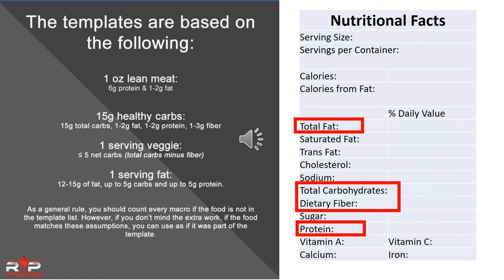The first thing you need to think about when trying to figure out if a particular food fits into your plan is to look at the template assumptions we have on the RP clients Facebook page, and that many of you were sent when you first signed up for one-on-one coaching. One ounce of lean meat has about six grams of protein and one to two grams of fat. Per 15 grams of healthy carbs, you can expect one to two grams of fat, one to two grams of protein, and one to three grams of fiber. Things are considered a vegetable if one cup has five net carbs. A serving of fat is a food with 12 to 15 grams of fat, and per those 12 to 15 grams of fat you may find up to five grams of carbs and up to five grams of protein.